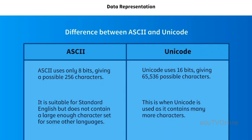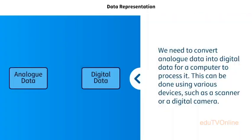In both ASCII and Unicode, each character is represented as a binary number. We regularly use our computers to store and view images. An image as we see it is analog data, but a computer will only understand it if it is digital data. We need to convert analog data into digital data for a computer to process it.